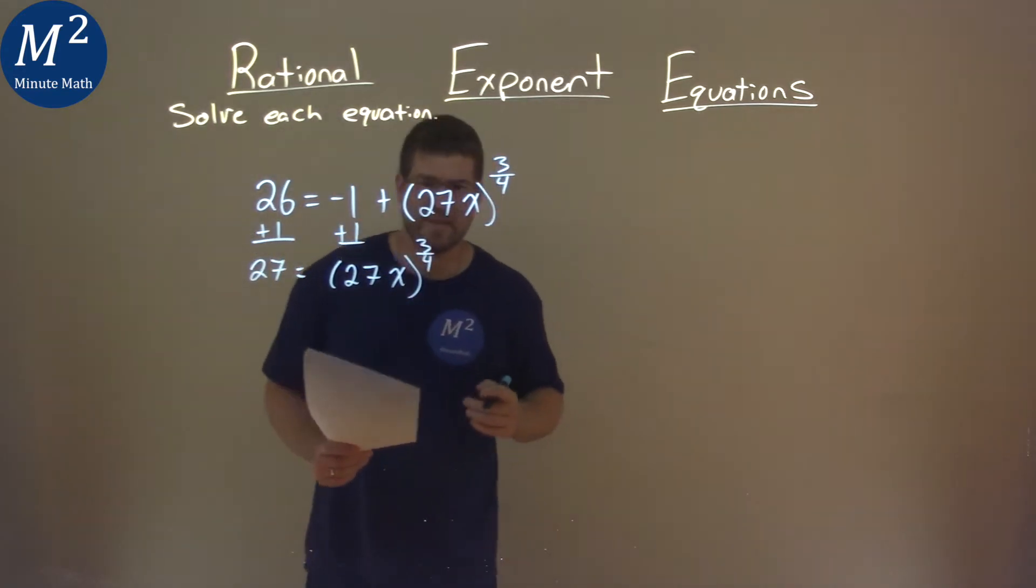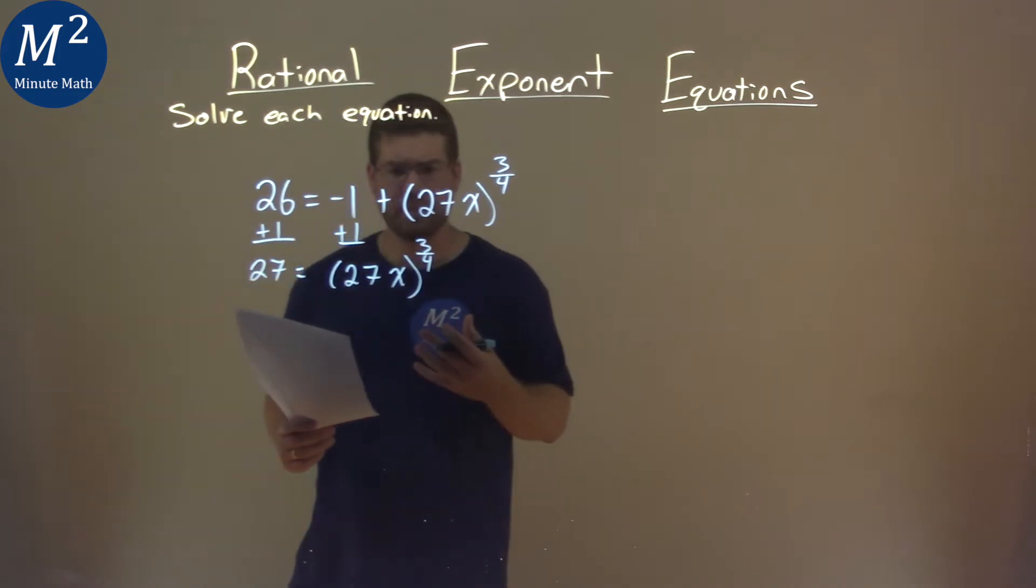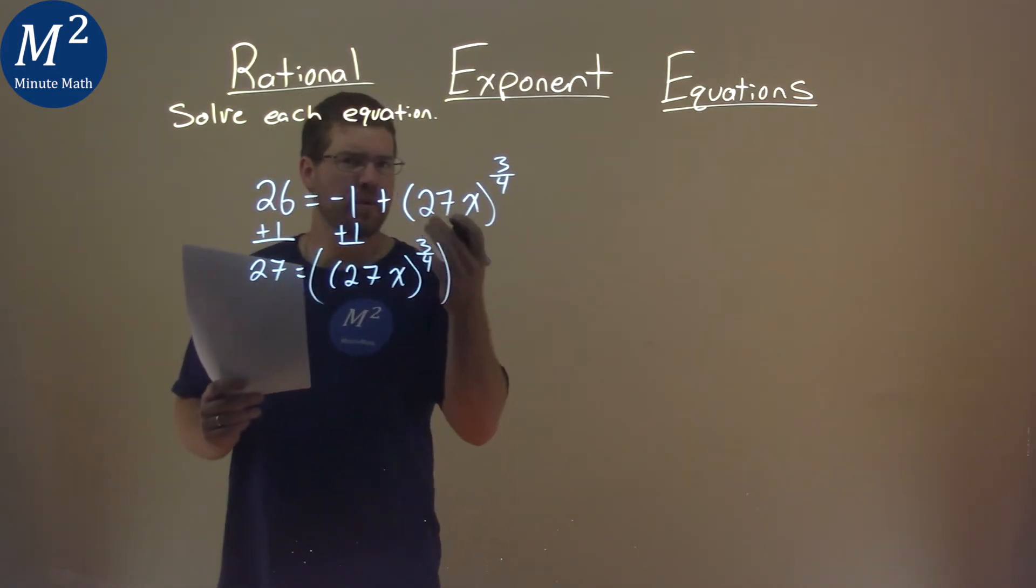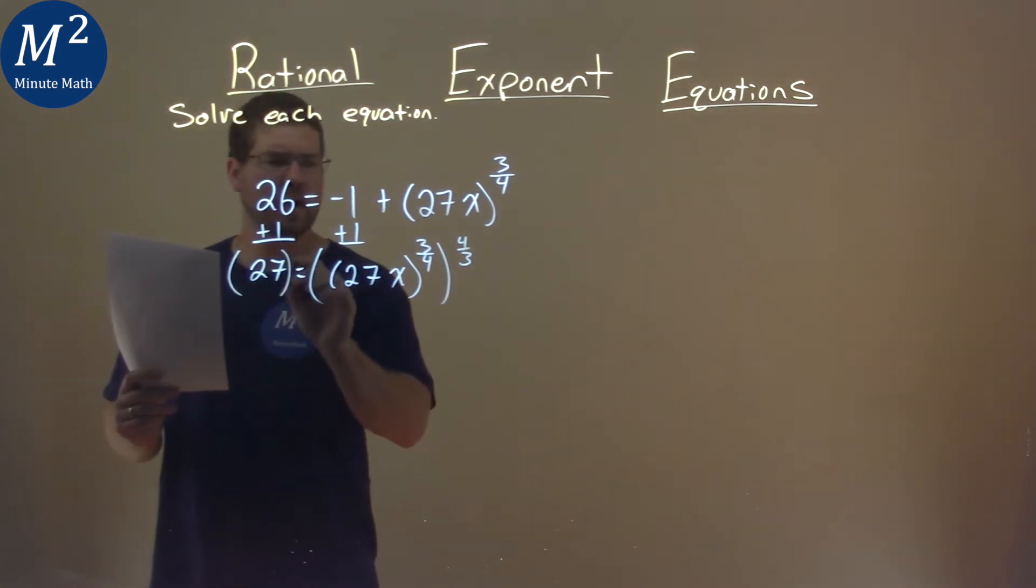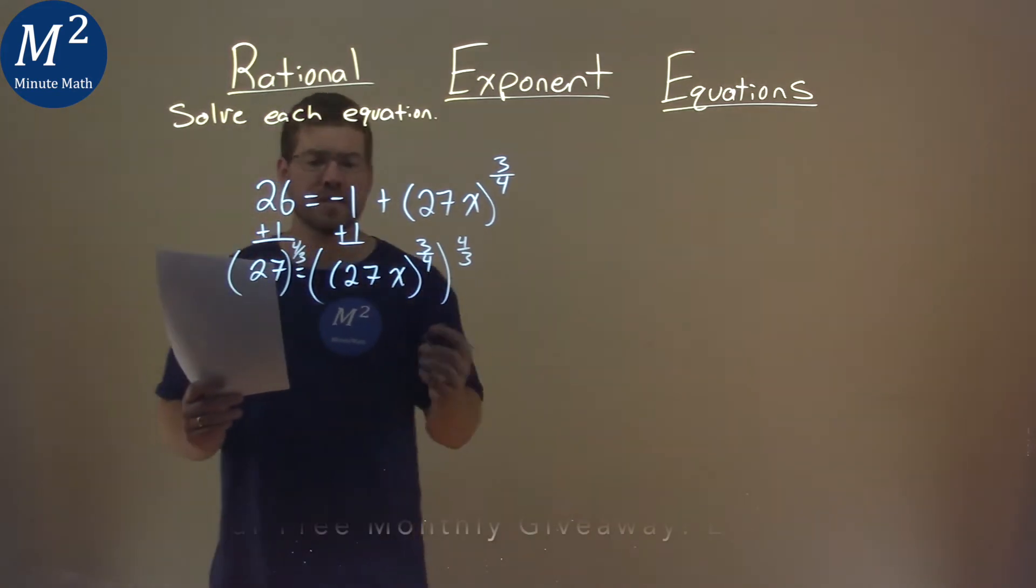Now this exponent is in my way. I need to get rid of it. The only way to do that, really, is to raise both sides by the 4 thirds power now. I just flipped the 3 fourths fraction. We'll make sure we do that to both sides here.